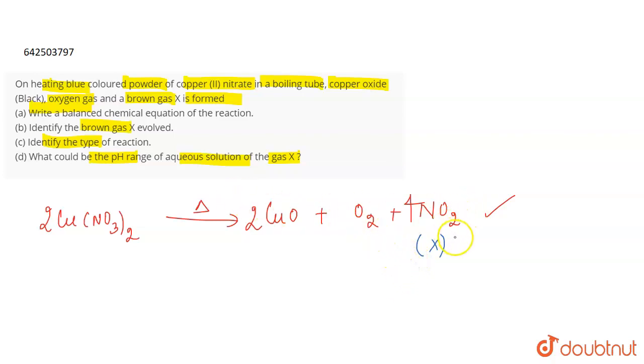So the brown gas evolved is nitrogen dioxide and what is the type of this reaction? Now this is a decomposition reaction because one compound is decomposing to give two or more products. So this is a decomposition reaction.